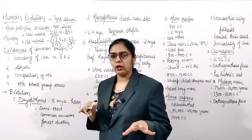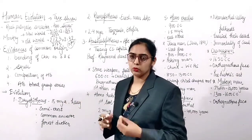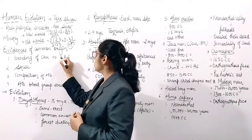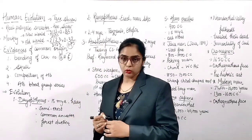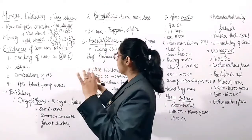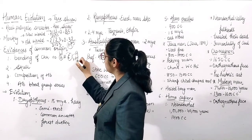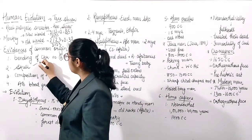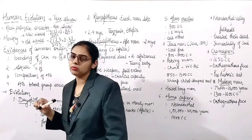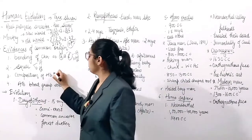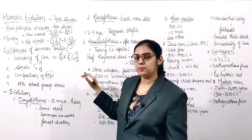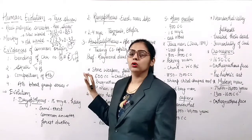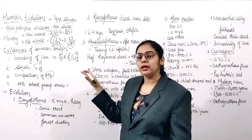We say that apes relate to humans, but what is the evidence? The evidence is that chromosome numbers 3 and 6 banding patterns are completely the same in apes and humans. The skull of apes is also similar to adult humans. The composition of hemoglobin is also the same in apes and humans, and the ABO blood group series is also common in monkeys and humans.